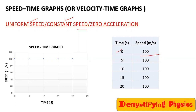Look at this example: at 0 seconds the body is traveling at 100 meters per second, and at 5, 10, and 15 seconds the speed is also 100 meters per second. Now plot this data — at 0 it is 100, at 5 seconds it is 100, at 20 seconds it is 100. Join the dots and you will get a straight line parallel to the time axis.